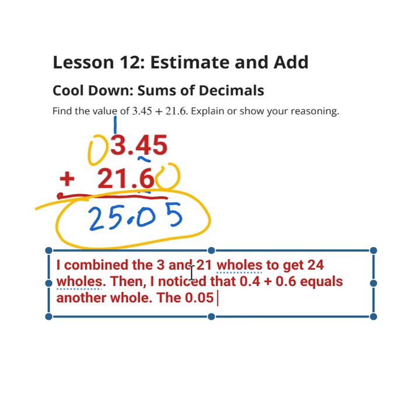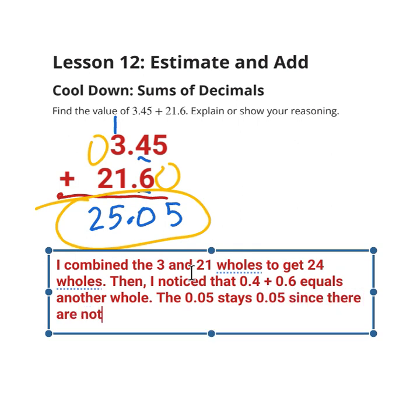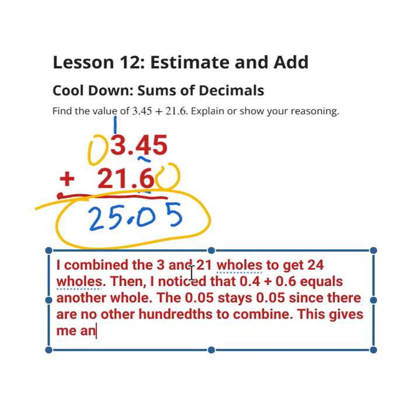The 5 hundredths stays 5 since there are no other hundredths to combine. This gives me an answer of 25 and 5 hundredths.